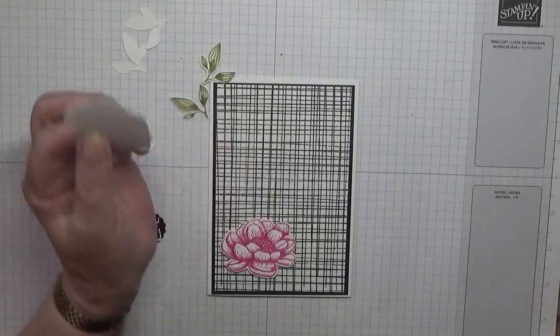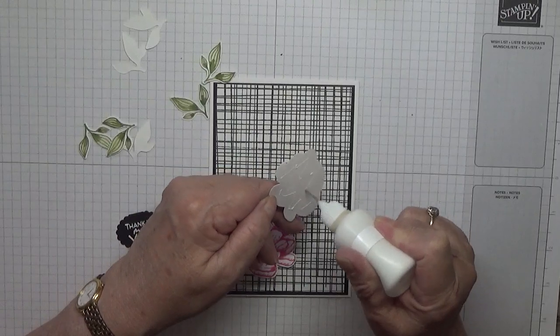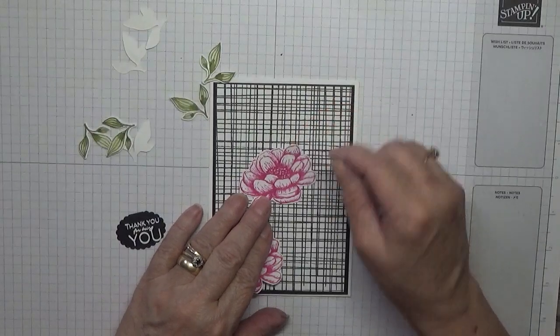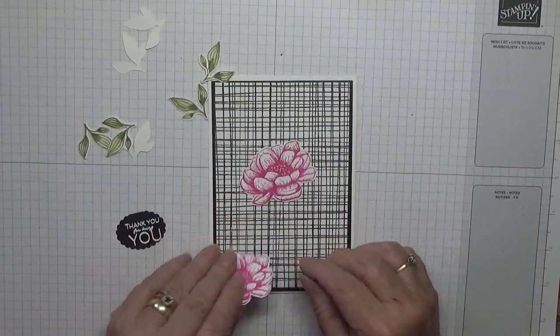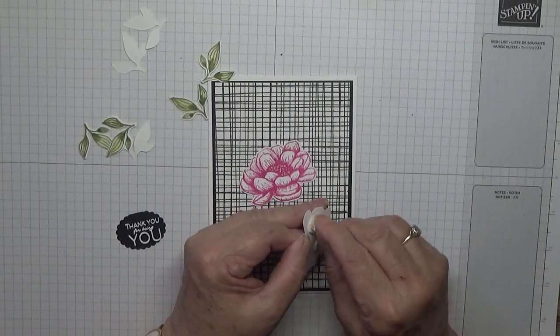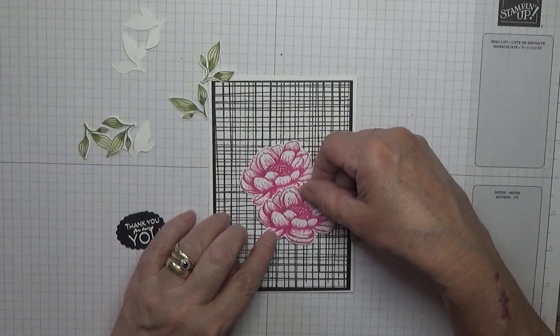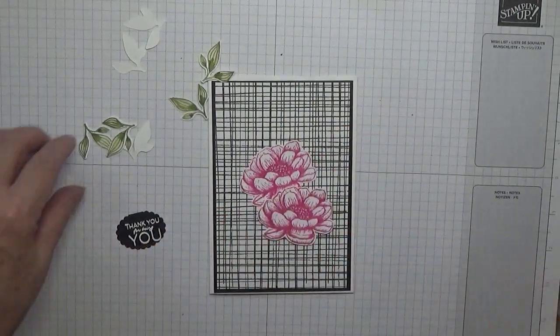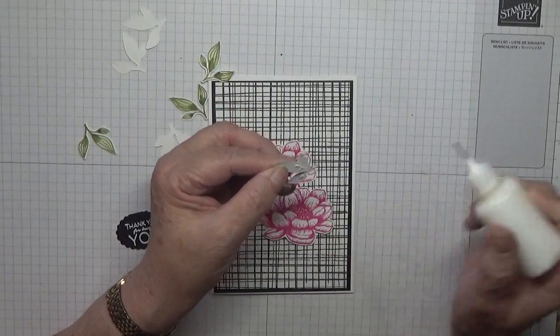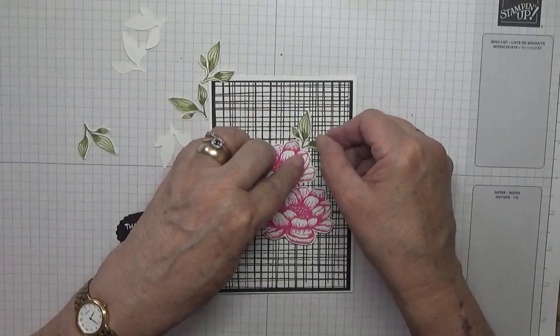So let's get started. Wherever we place this first one determines where the setting is going to be, so that one's there. I've just glued that all the way around, which you shouldn't have done, so we're going to have trouble getting these leaves under. That's all right, oh no, not too bad.